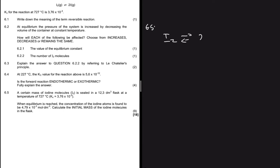Question 6.5: a certain mass of iodine molecules I₂ is sealed in a 12.3 dm³ flask at 727°C, with the given Kc value. When equilibrium is reached, the concentration of iodine atoms is found to be 4.9 × 10⁻³ mol·dm⁻³. We need to calculate the initial mass of the iodine molecules. We set up the equation: I₂ ⇌ 2I.